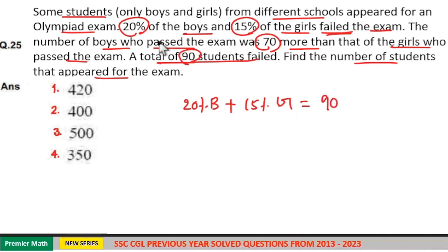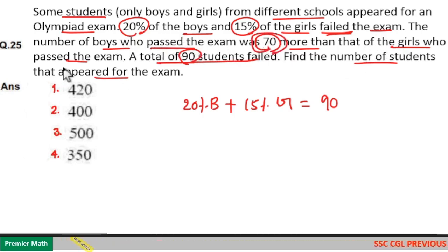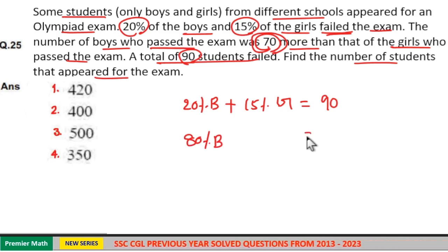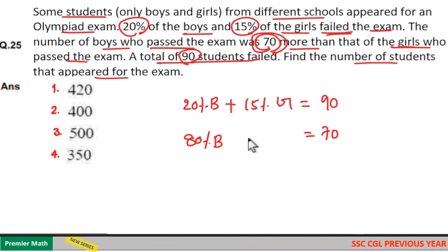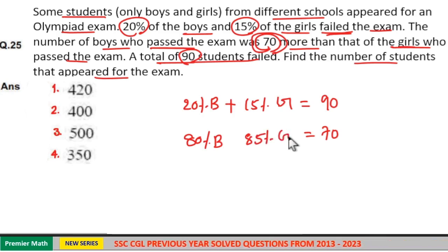And here, the number of boys who passed the exam was 70 more than that of girls passed the exam. Number of boys who passed is equal to 80% of boys, which is 70 more than number of girls who passed the exam. Girls who passed the exam is equal to 100 minus 15, 85%. So, difference between these two is equal to 70.